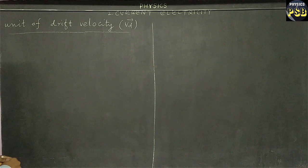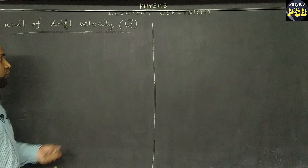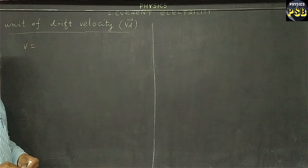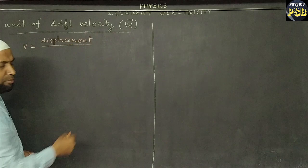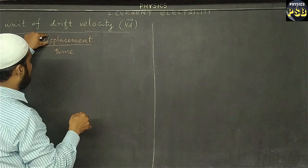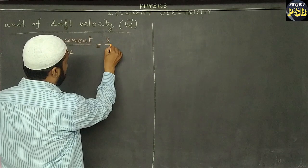The unit of drift velocity is similar to the unit of velocity. Velocity is the rate of displacement — rate means we divide a quantity by time. So rate of displacement means displacement divided by time, which we can write as s upon t, where s stands for displacement.